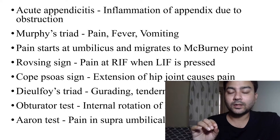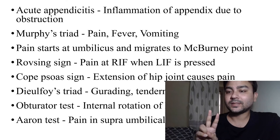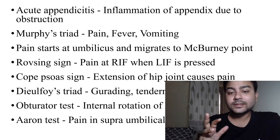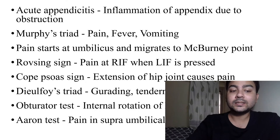Dua's triad is also important — direct MCQs have been asked on this. It consists of: guarding, tenderness at the right iliac fossa, and hyperesthesia at the right iliac fossa. Questions may ask which of the following is not included in Dua's triad, so remember all three components.